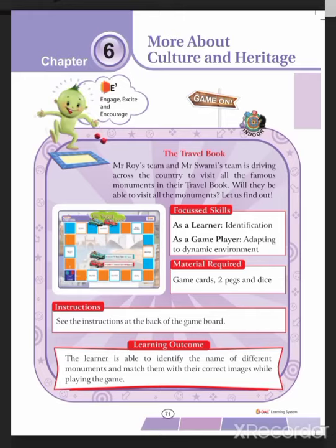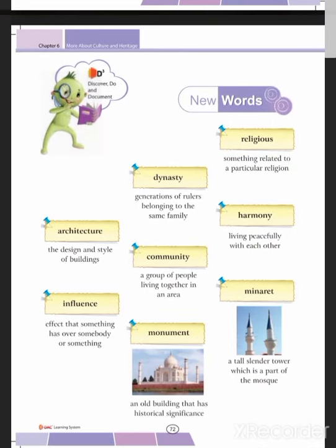Good morning students. Today we will discuss Chapter 6 of our social science book — Discovering Social Science, page 71. The chapter is 'More About Culture and Heritage'. Let's start with some new vocabulary: 'religious' means something related to a particular religion; 'dynasty' means a generation of rulers belonging to the same family; 'architecture' refers to the design style of buildings.